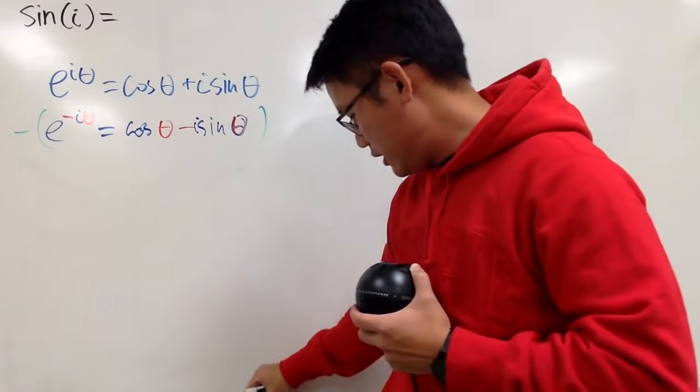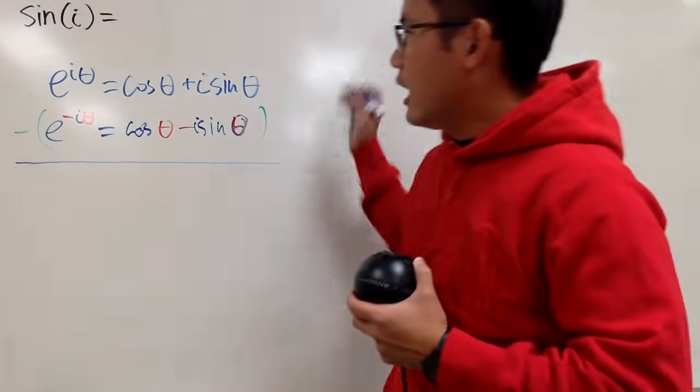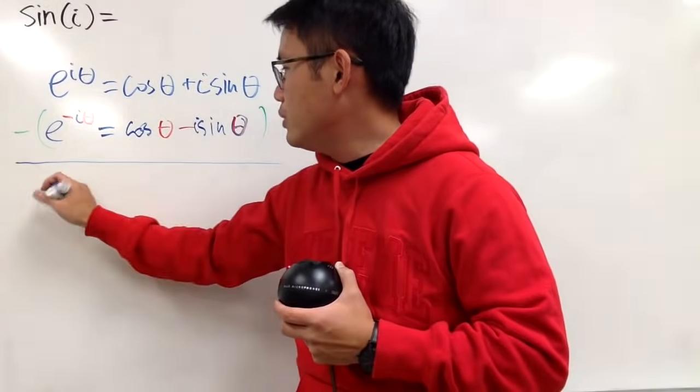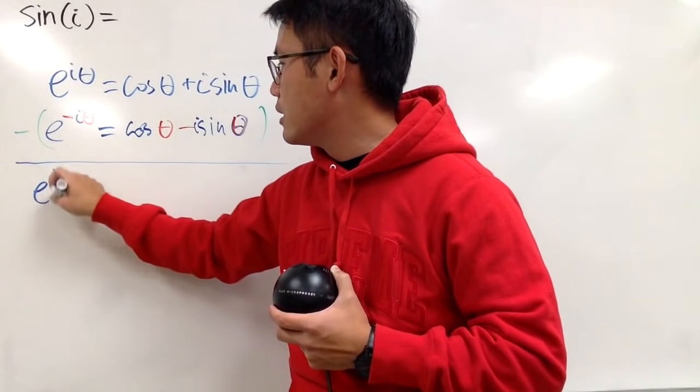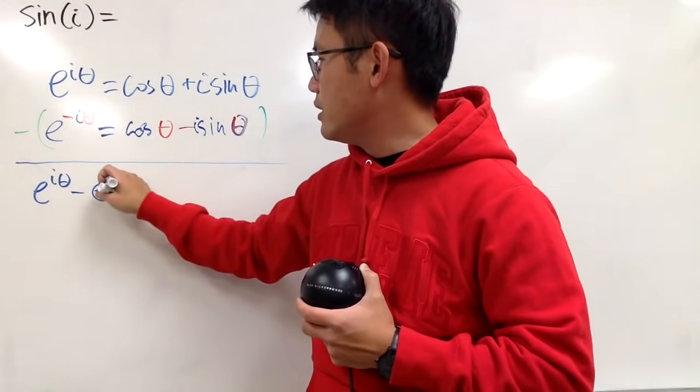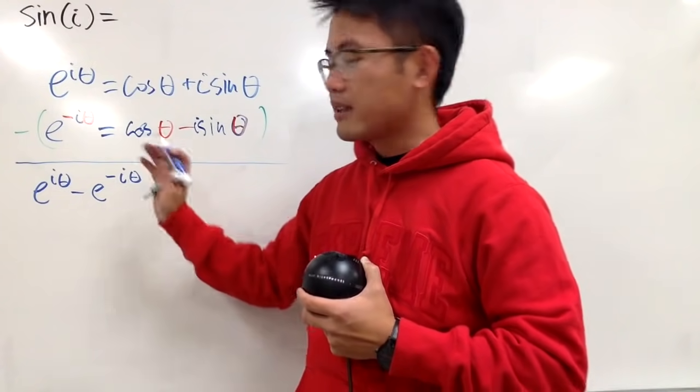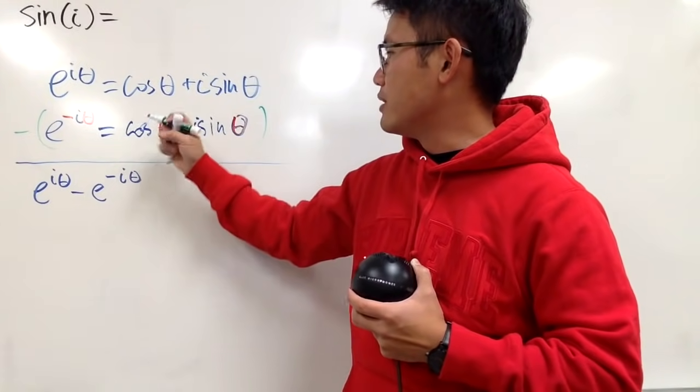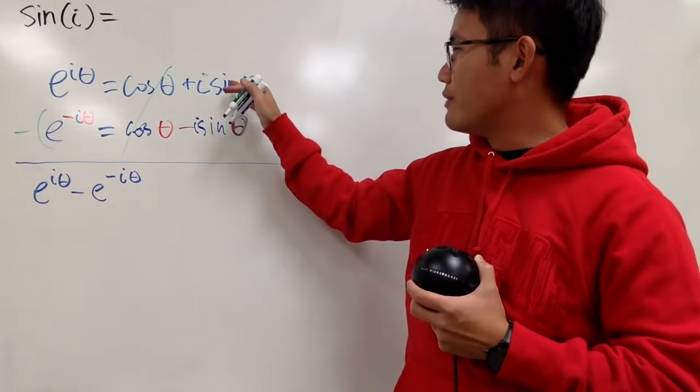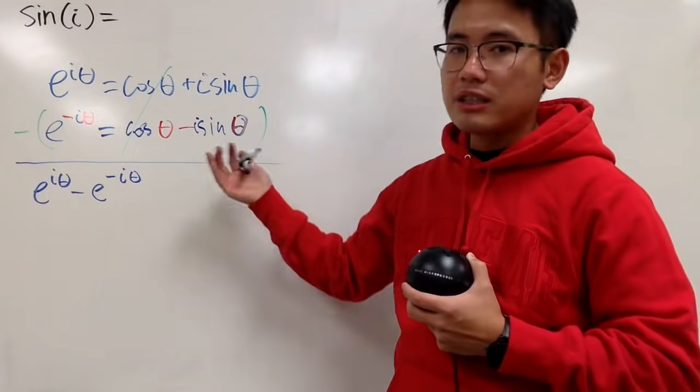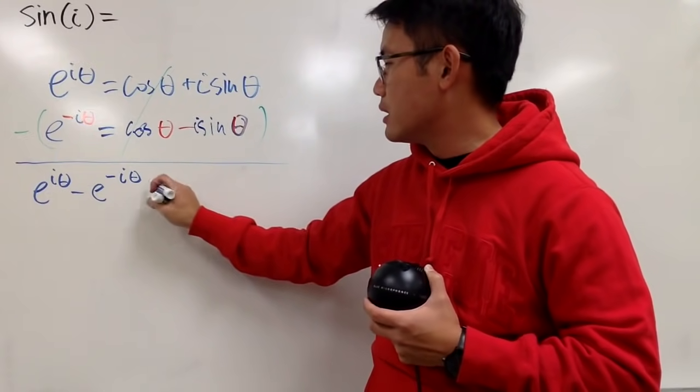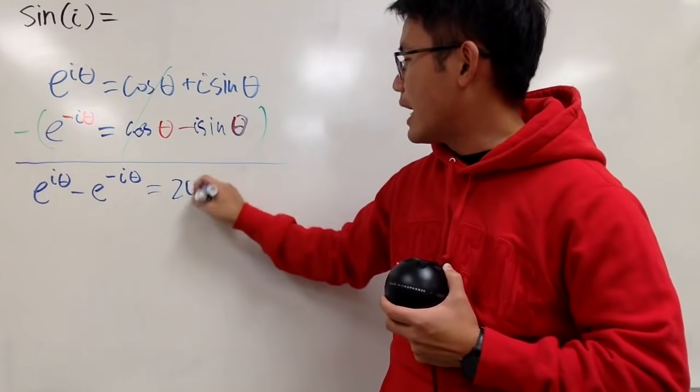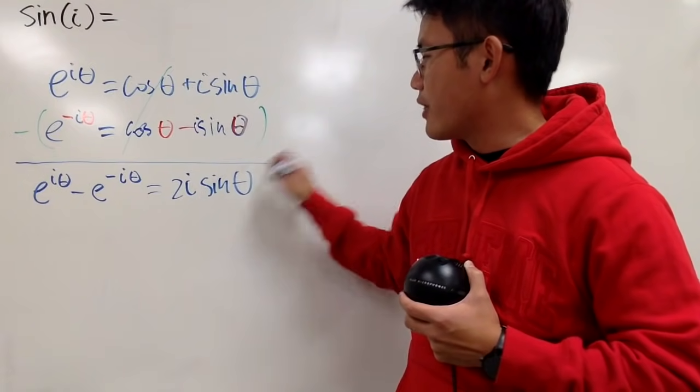And you will see that on the left-hand side, we get e to the i theta minus e to the negative i theta, like this. And cosine theta minus cosine theta, of course, they are gone. And we have this, minus minus becomes positive, so we have plus 2i times sine theta.